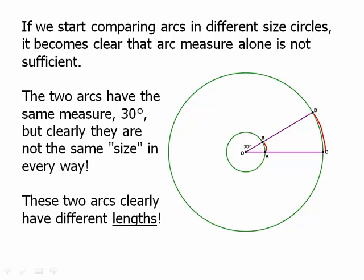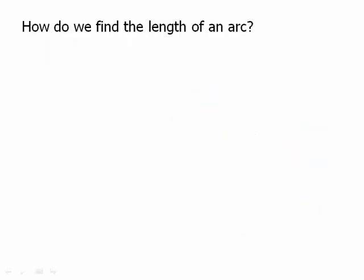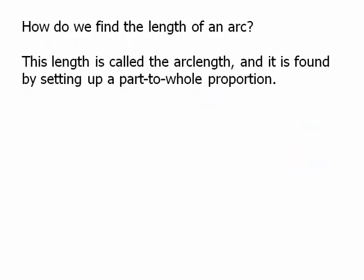So then it becomes a question: how do we find the length of an arc? This length is called arc length, and it is found by setting up a proportion — a part-to-whole proportion. Don't simply memorize a formula; understand the logic of it. We're really asking the question: how much of the circle do we have? And on the basis of that question, we set up this proportion.